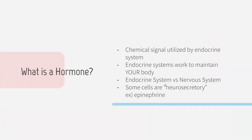So, what is a hormone? A hormone is a chemical signal utilized by the endocrine system. The endocrine system maintains and initiates bodily functions. Hormones travel through the bloodstream to send signals to other parts of the body. They work only on specific cells, called target cells, and these target cells are determined by the presence of receptors.